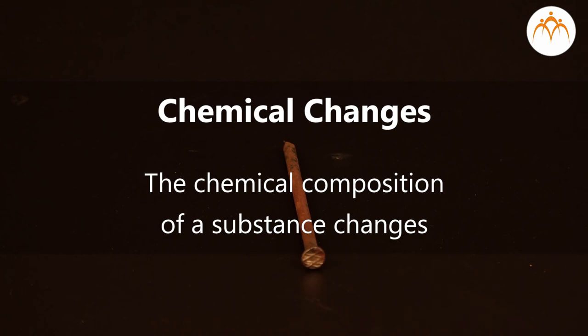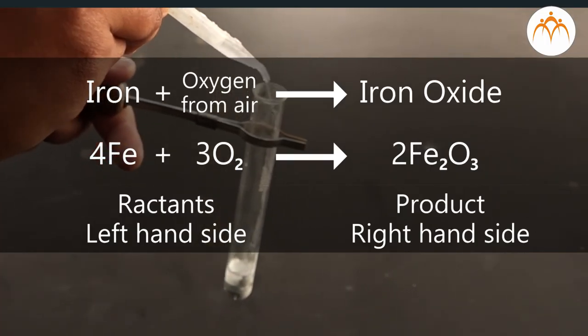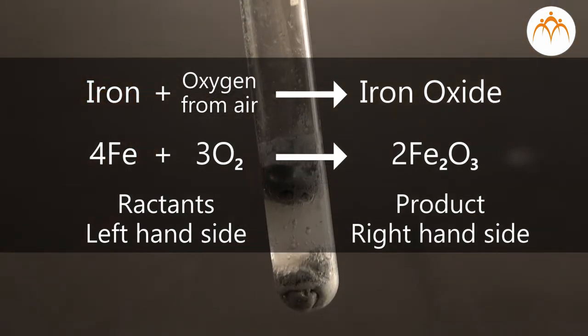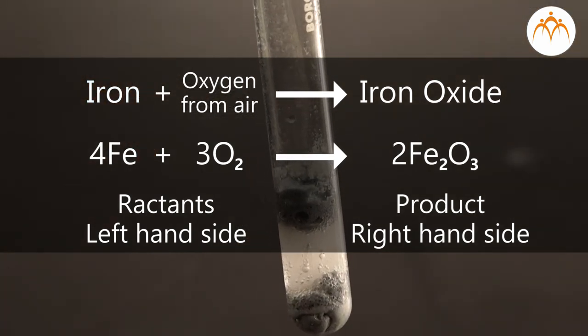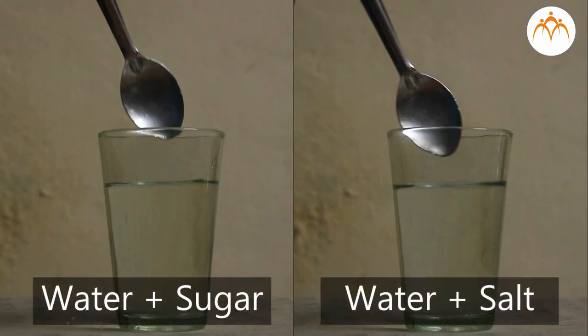The process in which the chemical composition of a substance changes is called a chemical change. In chemical reactions, a new chemical compound as a product is formed from the starting reactants. We have studied how we can differentiate a physical change from a chemical change. First, we look for an indication that a chemical change has occurred.